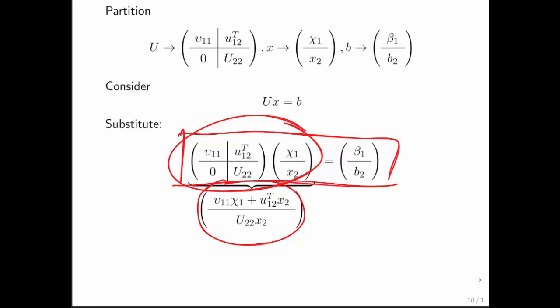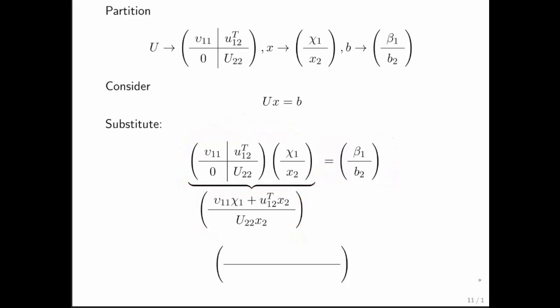So if we then set what's on the left of the equal sign to what's on the right of the equal sign, what we find is that u11x1 + u12x2 is beta 1 and U22 x2 is equal to b2.